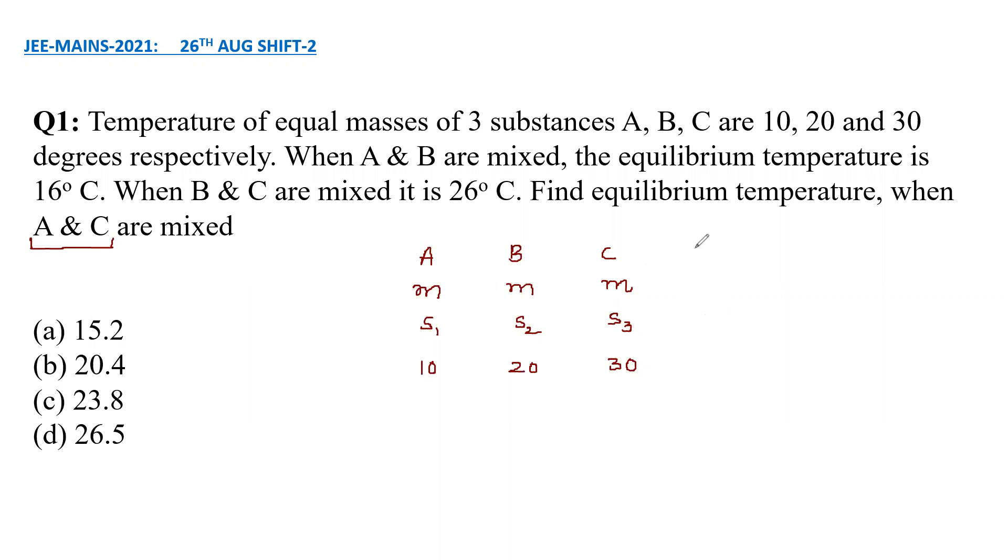Whenever there is no phase change, the final temperature is simply M1 S1 T1 plus M2 S2 T2 and so on, divided by M1 S1 plus M2 S2 plus so on. This is the formula we are using in this particular question.